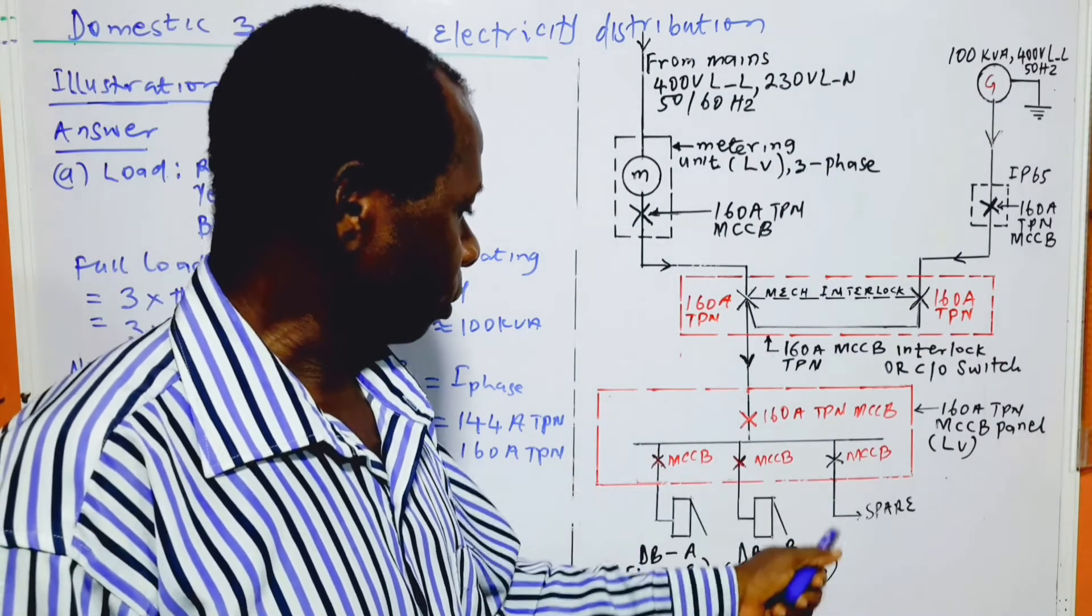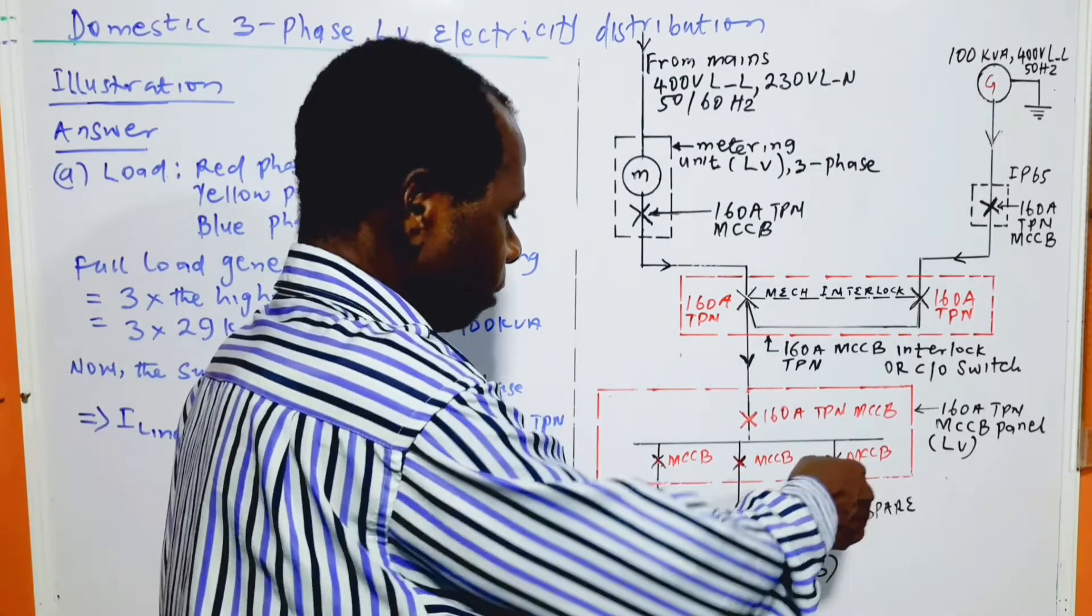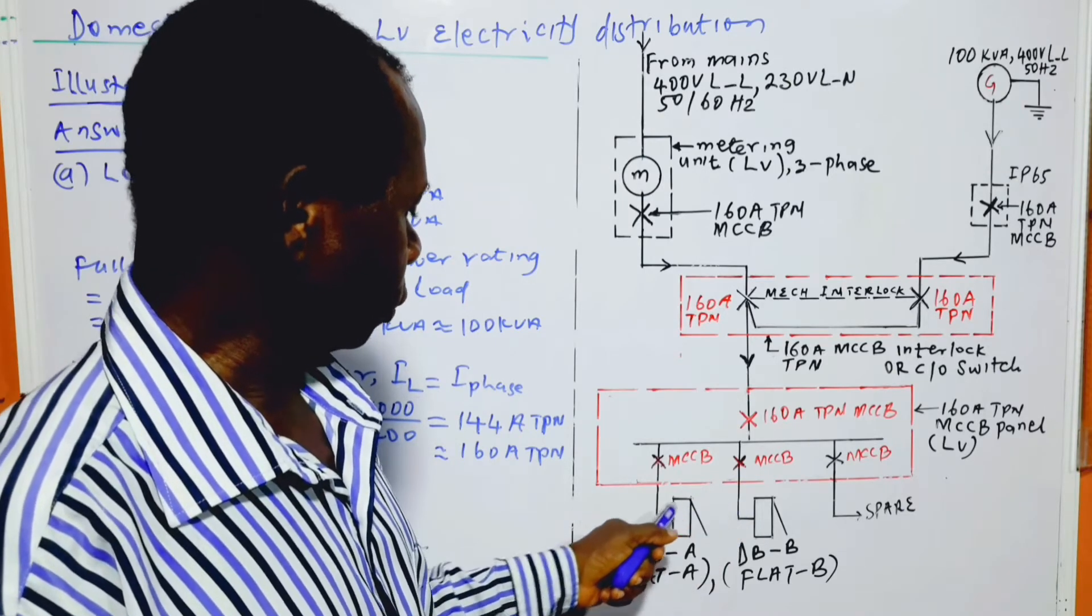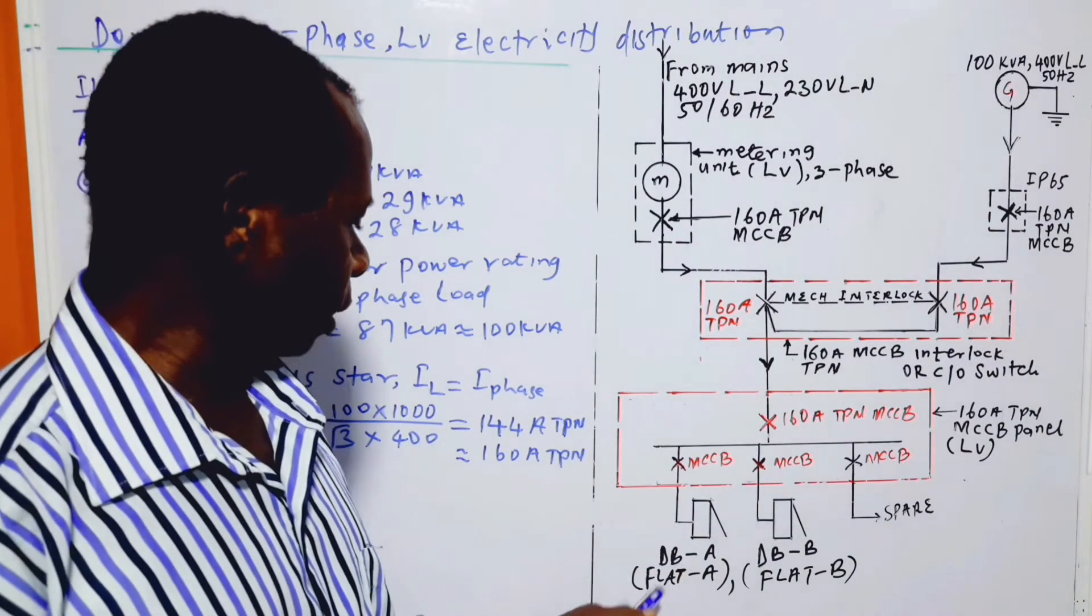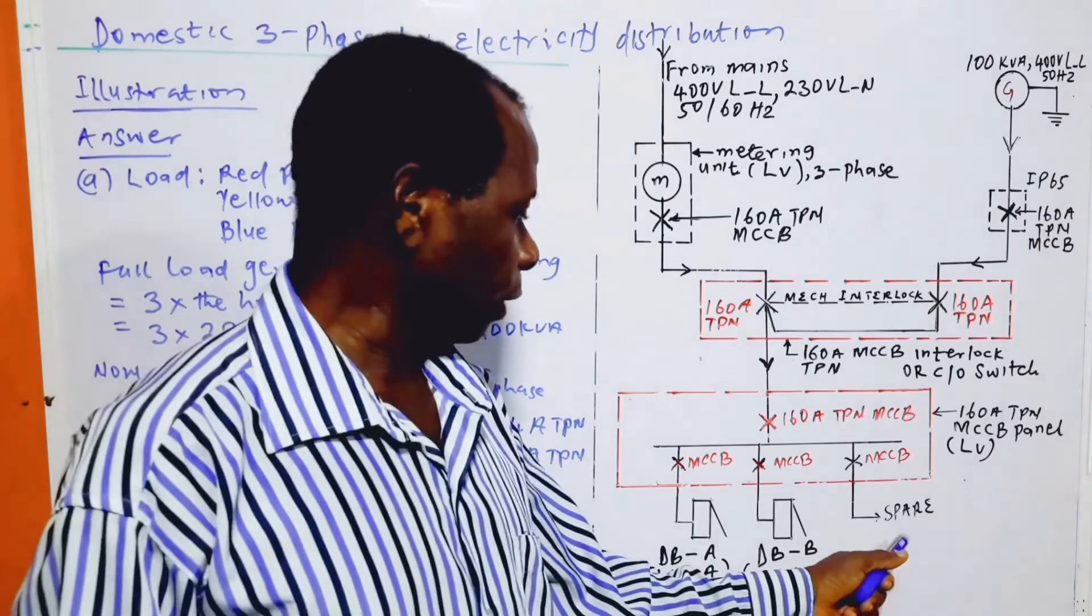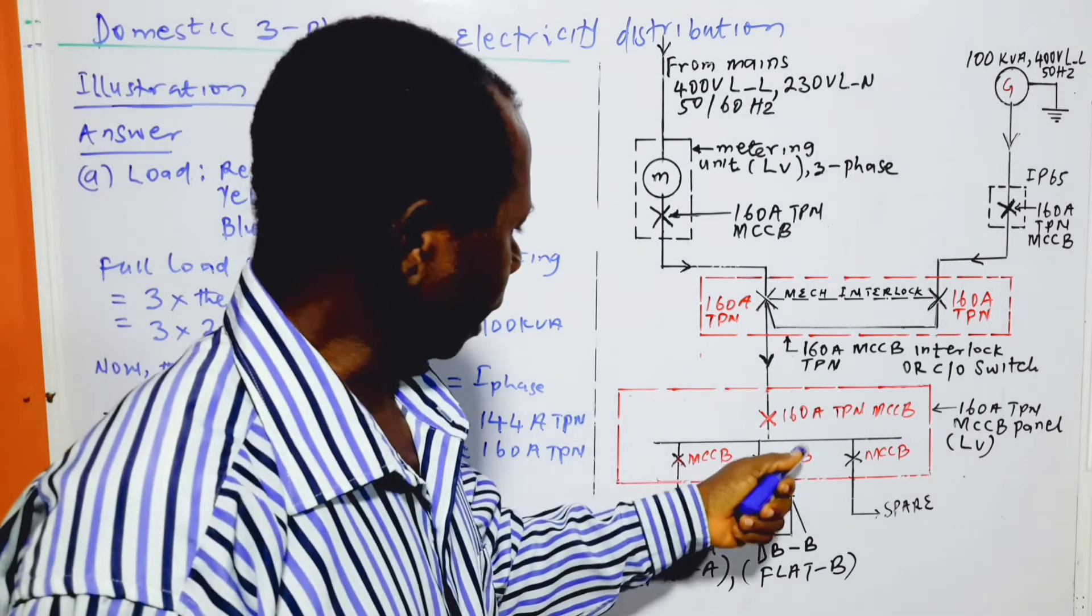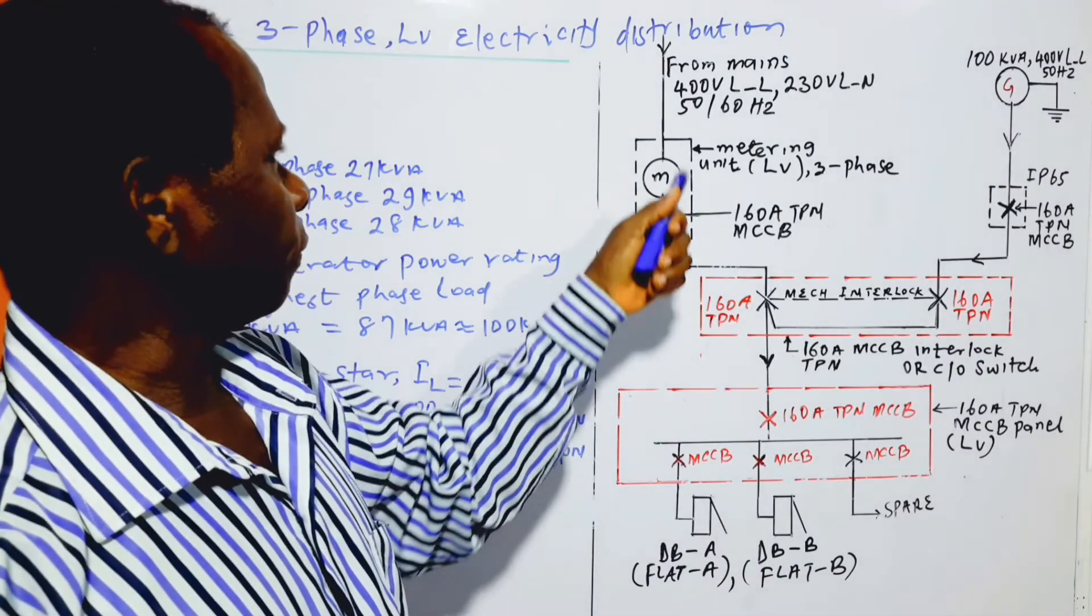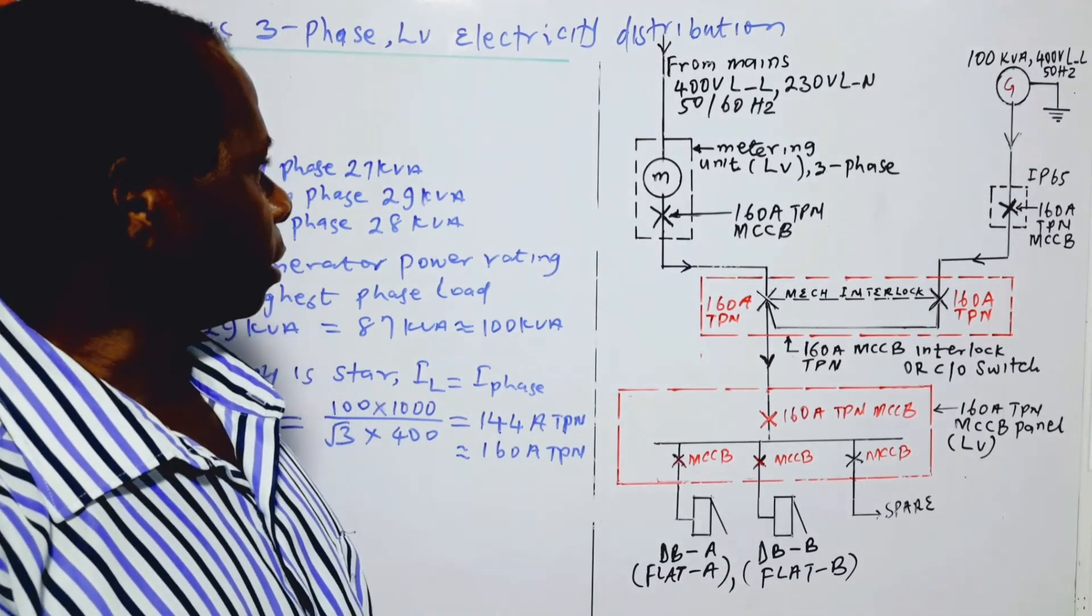These are MCCBs. The sizes or ratings of these MCCBs depends on the ratings of the distribution boards. This is distribution board A feeding flat A, distribution board B feeding flat B, and we have a spare outgoing. The outgoing could be more than three, depending on the number of flats to be reasonably fed with a three-phase low voltage power supply system.